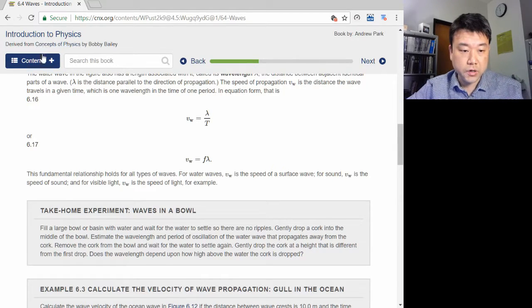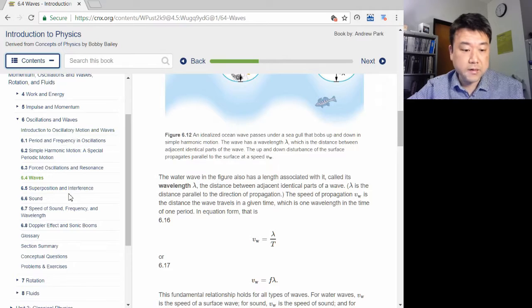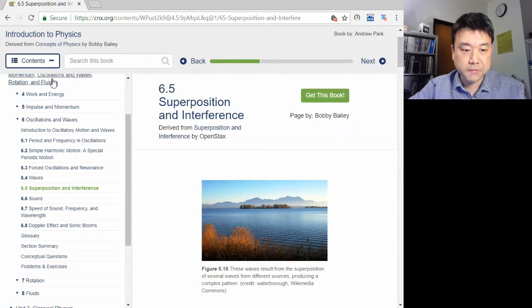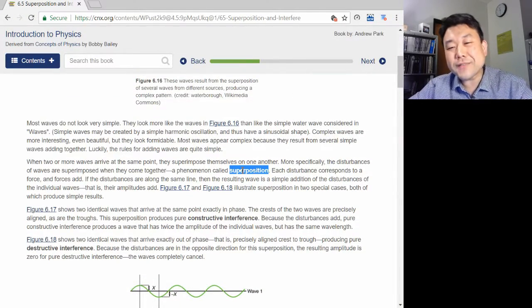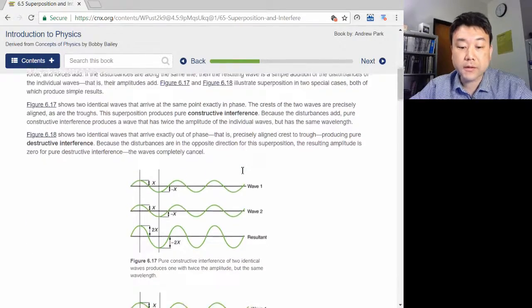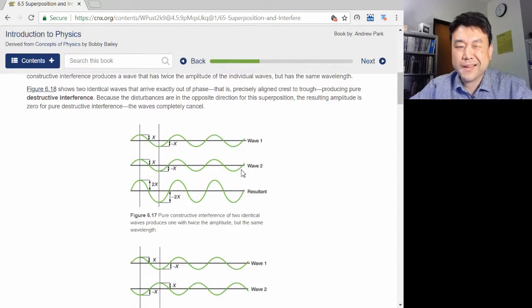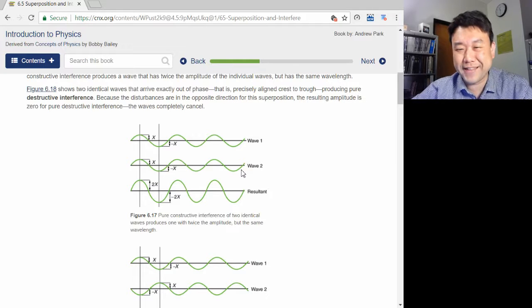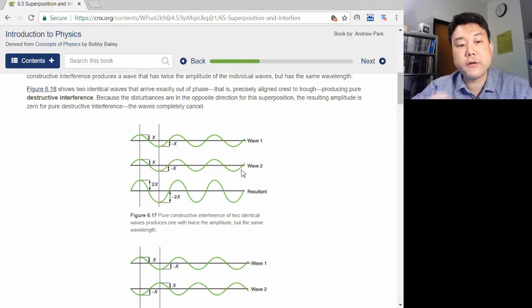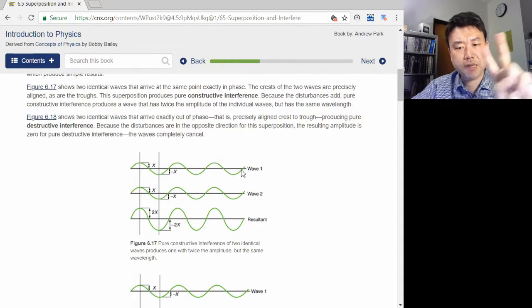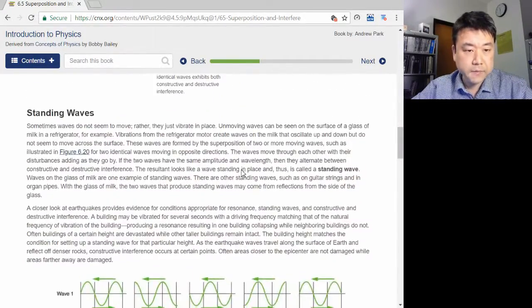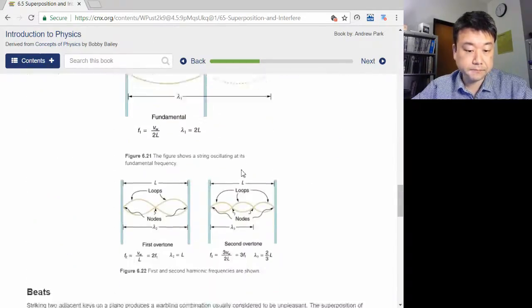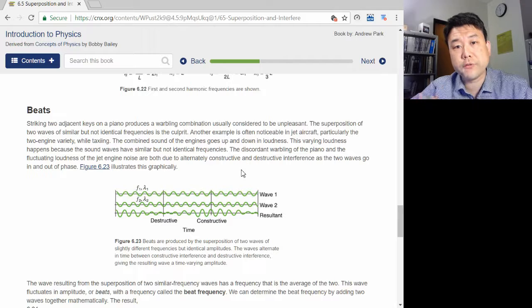The second very general feature I want to point out is what is called superposition, or sometimes when we want to sound fancy, the superposition principle. It deals with how two waves behave when they interact or overlap. Let me spoil it for you: they just add. They don't do anything else. But this simple addition leads to very interesting features, results of interference. We will look at two examples of these features: standing waves and beat. There will be separate videos to demonstrate these.